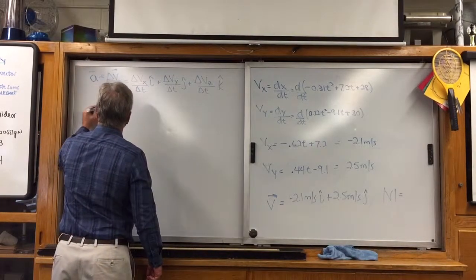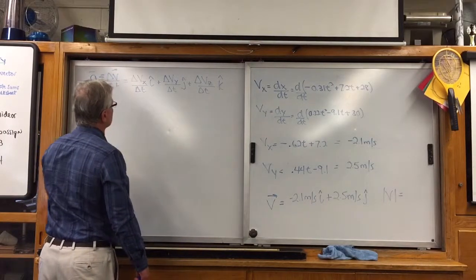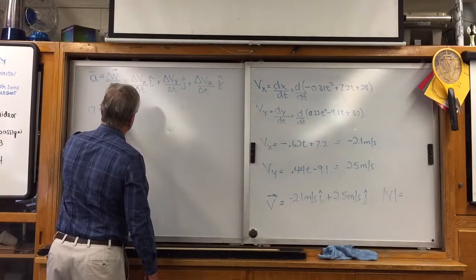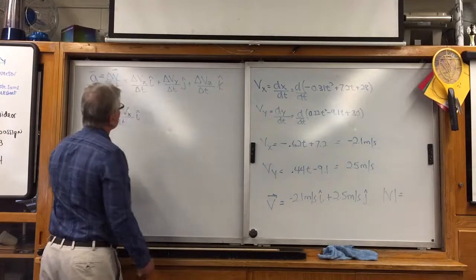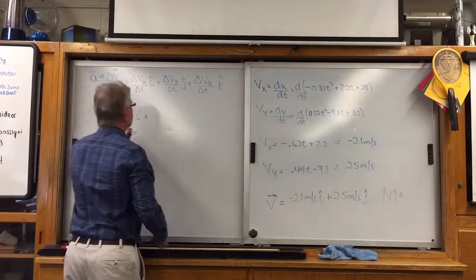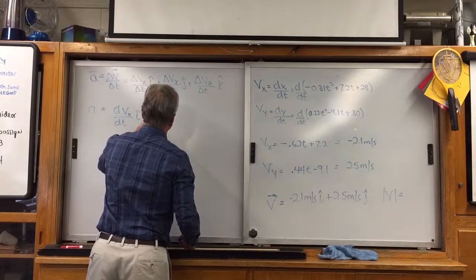All right, now let's take a look at the instantaneous acceleration. So what we could do is replace this with the derivative of the velocity in the x direction, dt, that's in the i. And here, we could actually take a look here, instead of saying the change in velocity in the y direction, we could say d vy sub y, dt. That's in the j.